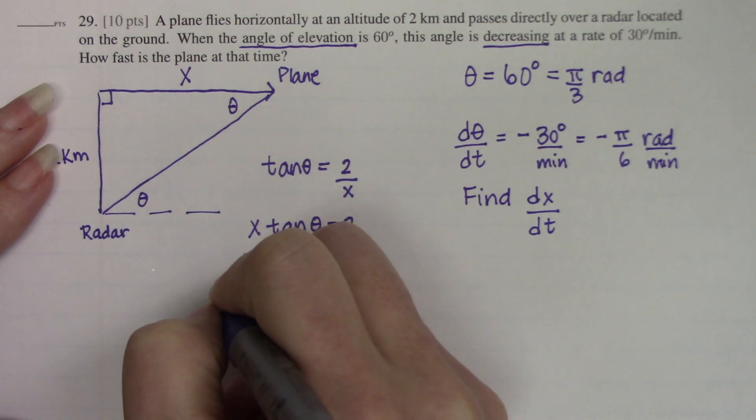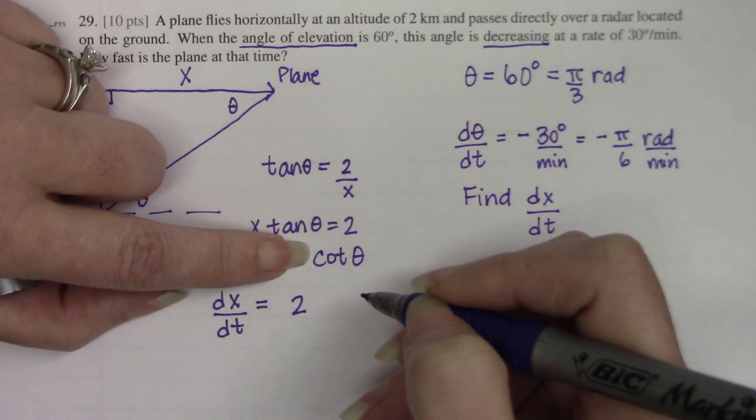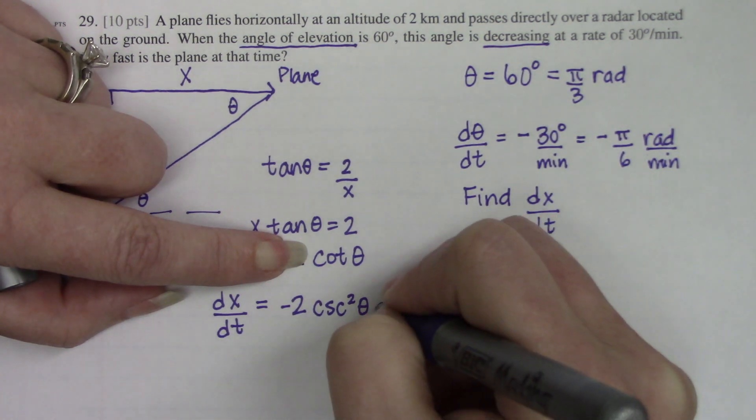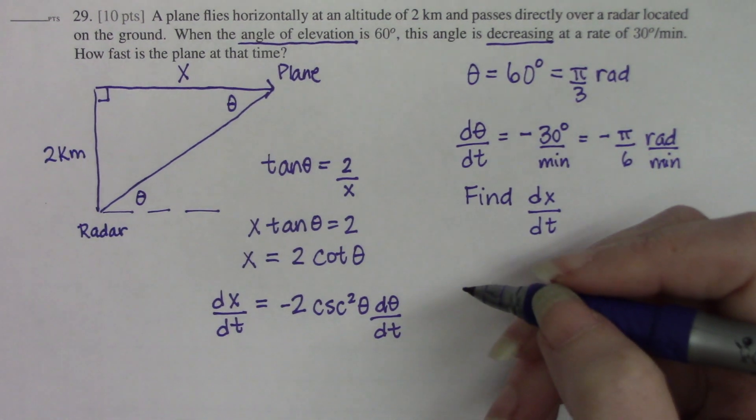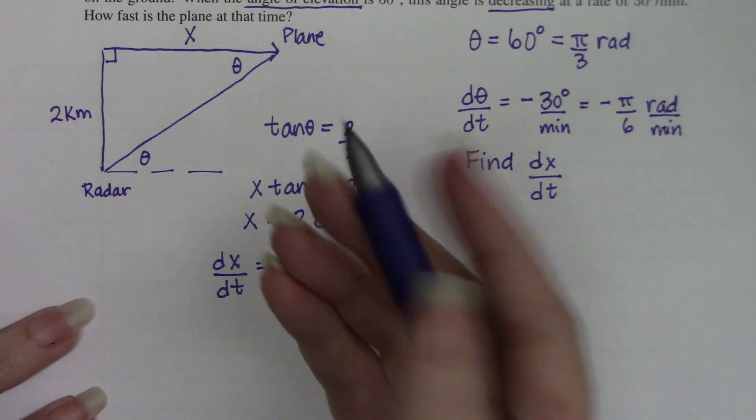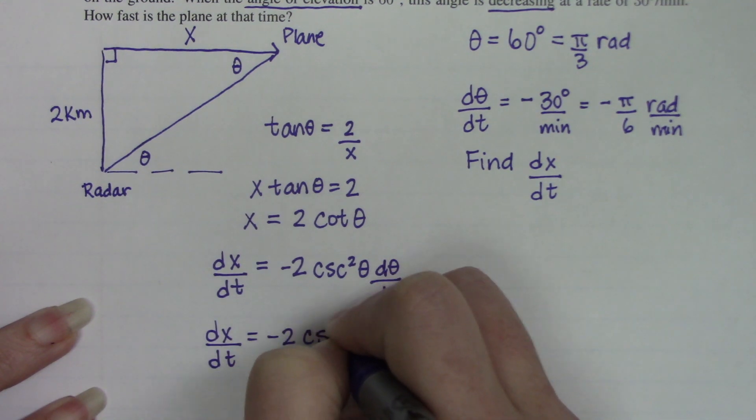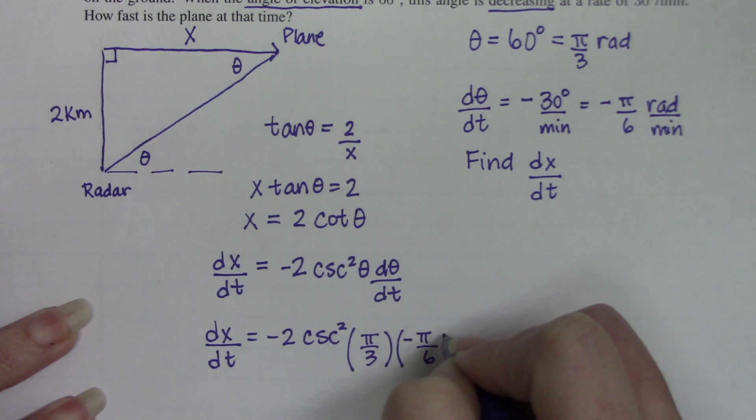Now it's much simpler to take the derivative. The derivative of the left side is just 1 times dx dt. The derivative on the right side is 2 times the derivative of cotangent is negative cosecant squared theta times d theta dt. This worked out quite nice. That's what we're looking for. We just need to plug our numbers in. So dx dt equals negative 2 cosecant squared of pi over 3 times d theta dt which is negative pi over 6. The units are going to be in kilometers and minutes.